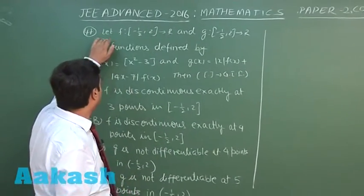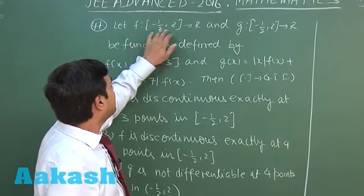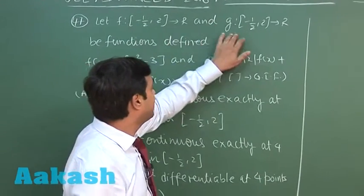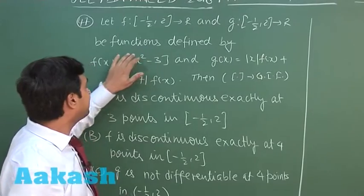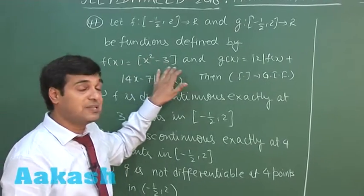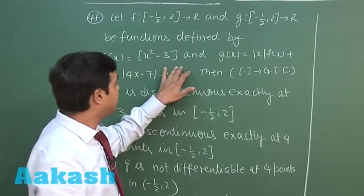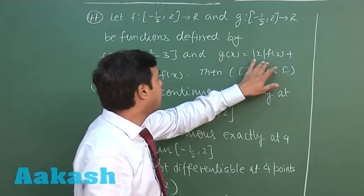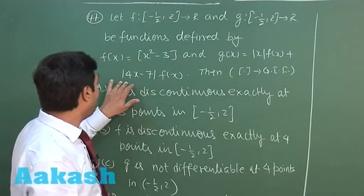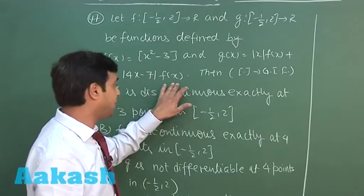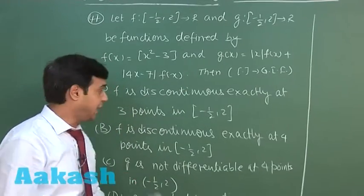Let us talk about question number 47. Let f from minus half to 2 to R, similar for g, be functions defined by f(x) equals greatest integer of x squared minus 3, and g(x) equals mod x times f(x) plus mod of 4x minus 7 times f(x).